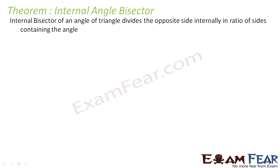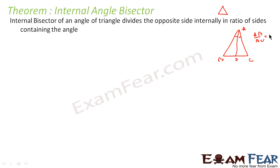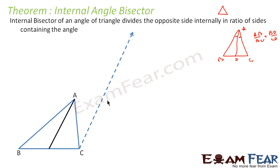Theorem for internal angle bisector: the internal angle bisector of a triangle divides the opposite side internally in the ratio of the sides containing the angle. We have seen this. If this is triangle ABC and AD is the angle bisector, then to prove this, let us draw a line CE parallel to AD, and extend AB to meet at point D.